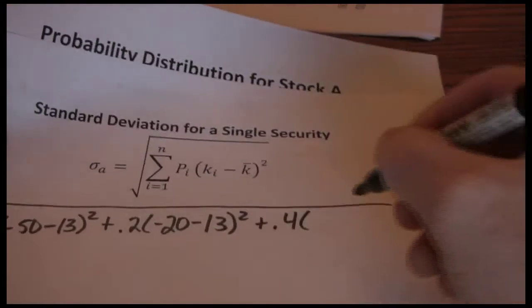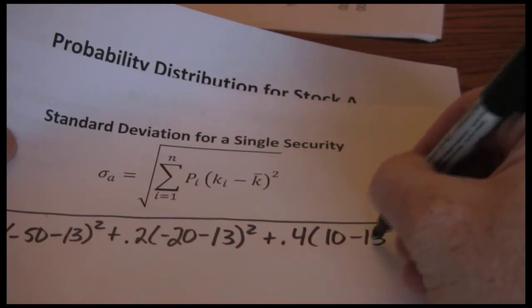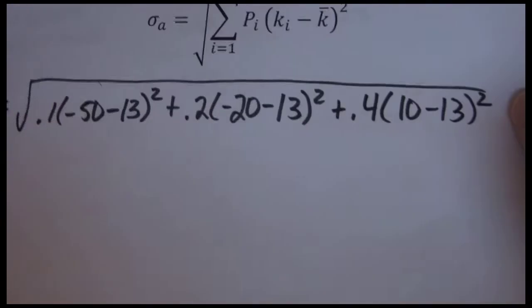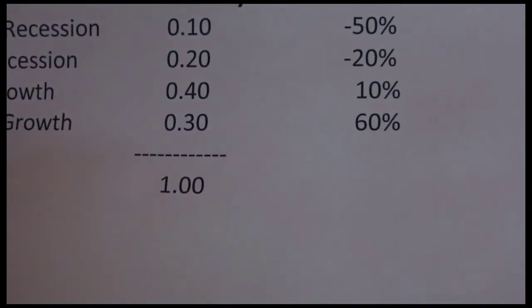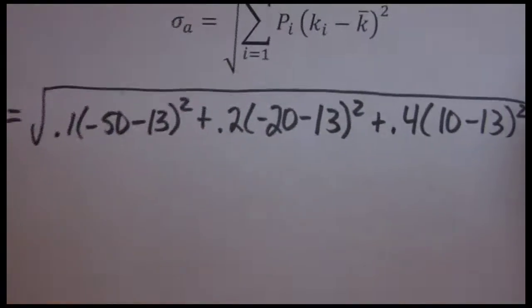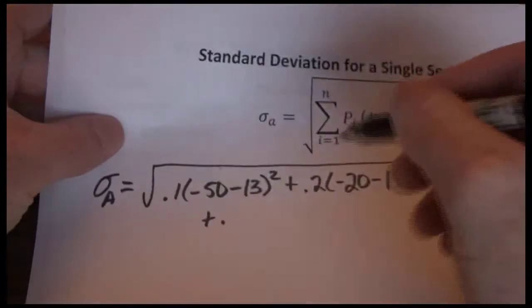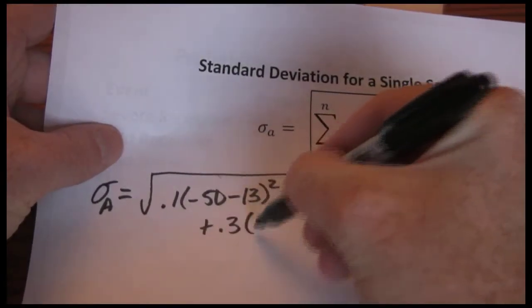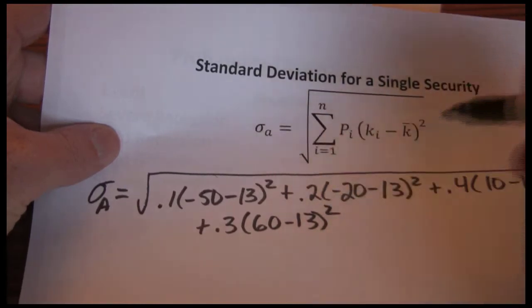Our third outcome has a forty percent chance or .4 probability of earning a ten percent rate of return. So .4 times ten minus thirteen squared. And then our last scenario was the strong growth scenario which should generate a sixty percent rate of return and has a probability of .3. So .3 times sixty minus thirteen squared.